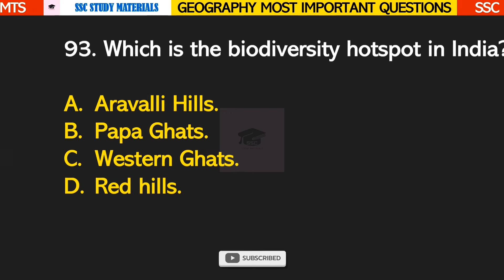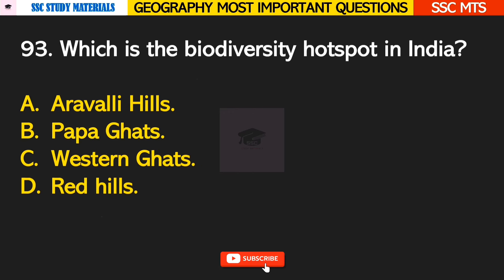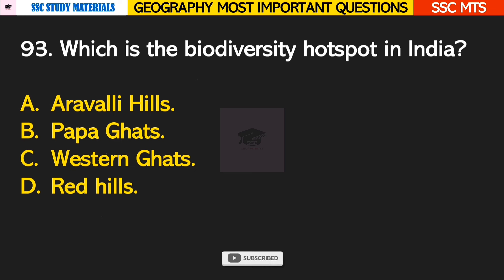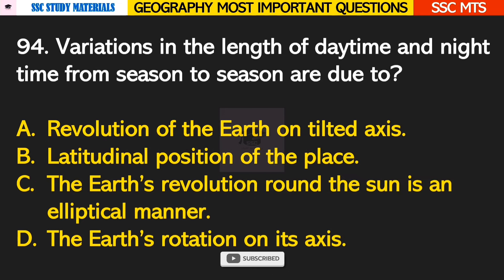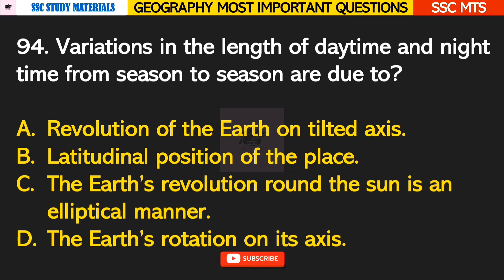Question number 93: which is the biodiversity hotspot in India? Answer C — Western Ghats. Question number 94: variations in the length of daytime and nighttime from season to season are due to? Answer A — revolution of the earth on a tilted axis.